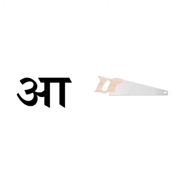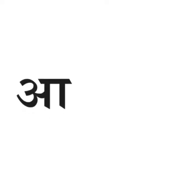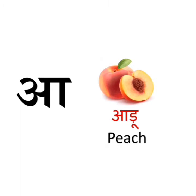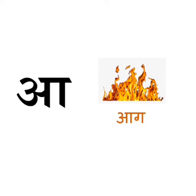A says aari — aari means saw. A carpenter uses it to cut the wood. A says aari — aari means peach. Peach is a fruit. A says aag — aag means fire. It is very hot.